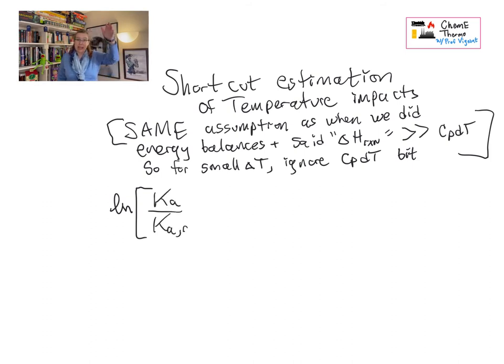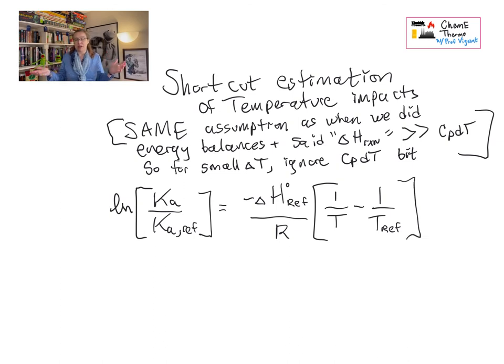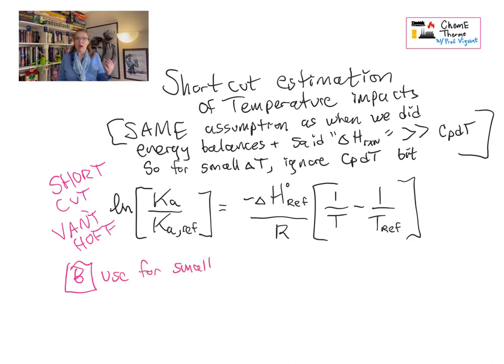It's the natural log of K, the reaction constant, at the temperature you're interested in, divided by K at the reference temperature, and it's equal to delta H at the reference temperature, so for us always 298 K, negative that delta H, divided by R times 1 over T that we're interested in, minus 1 over T ref, which again will always be 298 K. This is quite a handy little equation, and it's a good way to get an estimate of what we think the energetics are.